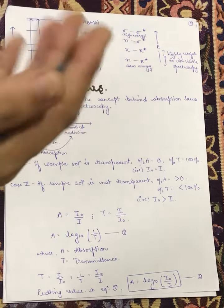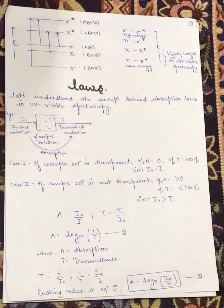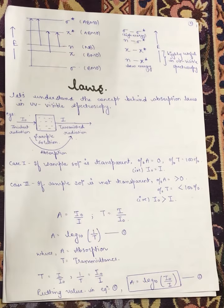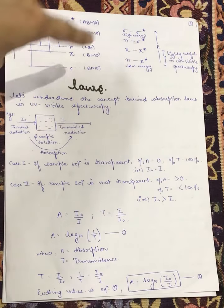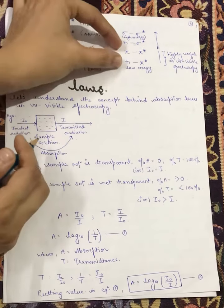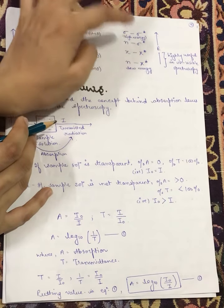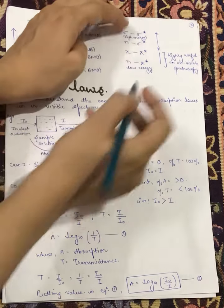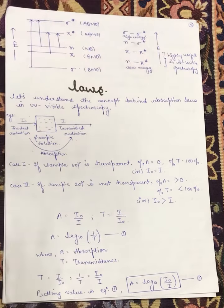The sigma to sigma anti-bonding transition is the most highly energetic. Next are the non-bonding to sigma anti-bonding transitions. Then we have the pi to pi anti-bonding transitions. Finally, the non-bonding to pi anti-bonding transition is the most useful in UV-visible spectroscopy.